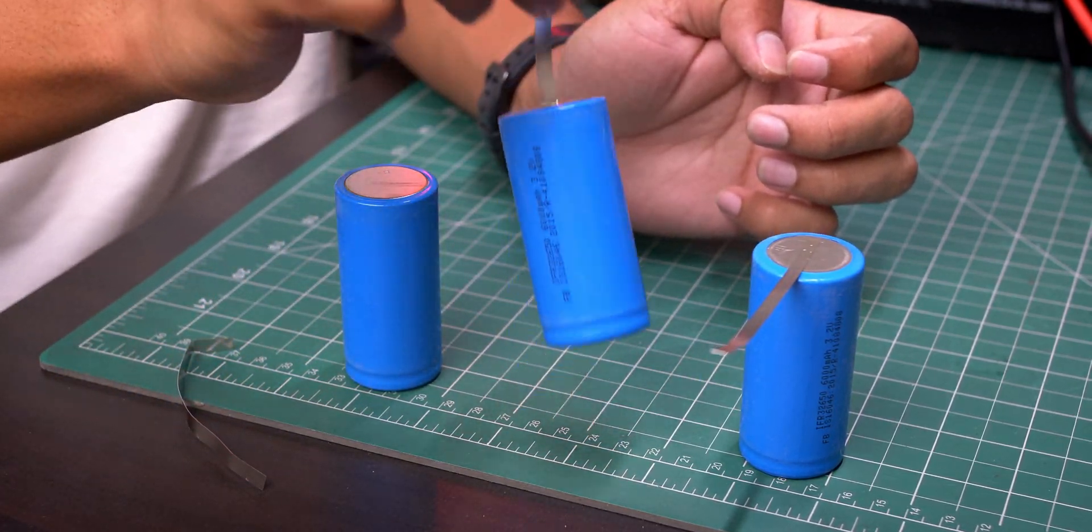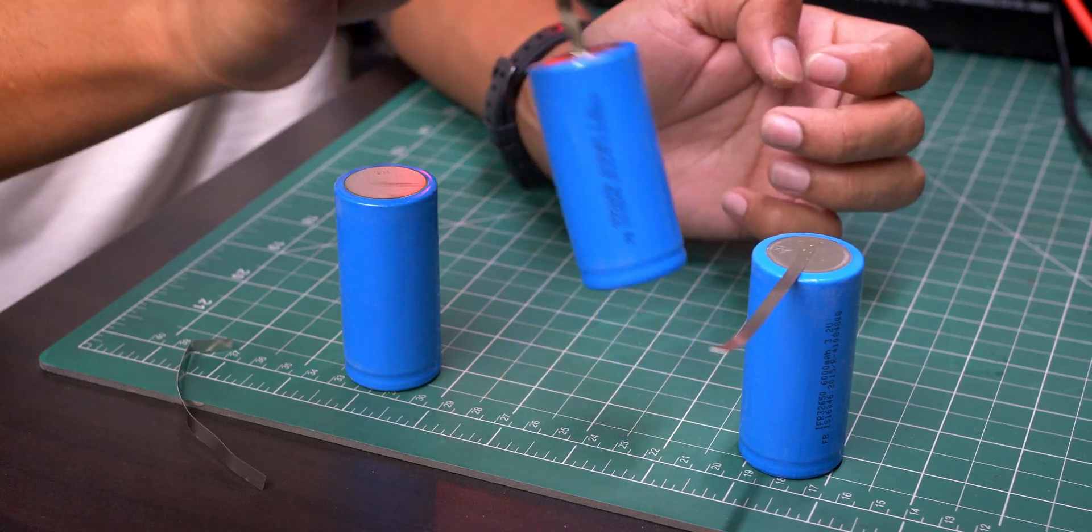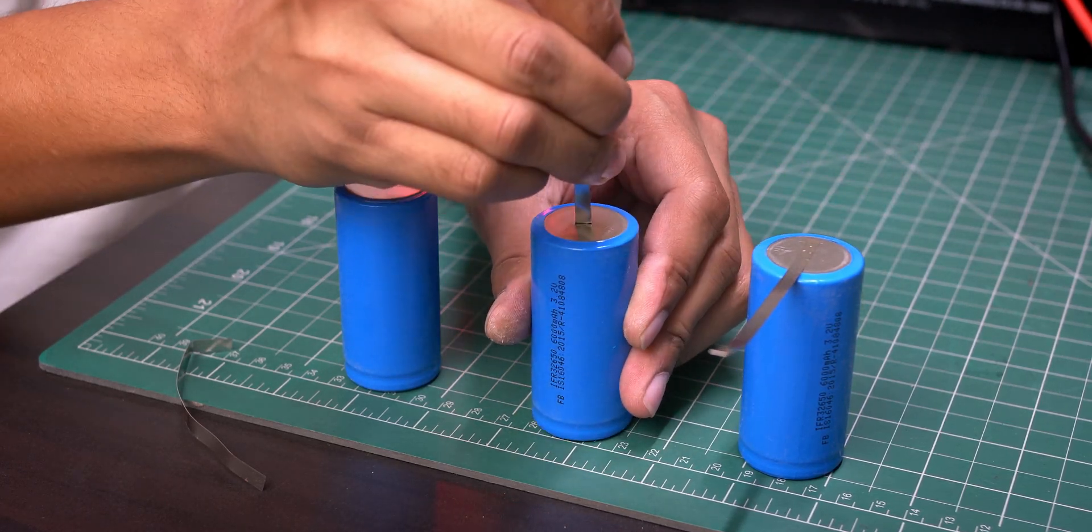0.1mm and 0.15mm is quite good, but you can't do 0.2mm welds.